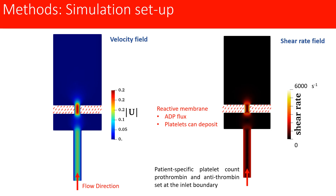In terms of biochemical boundary conditions, an ADP flux was applied at the membrane boundary. The membrane boundary is indicated with red dashed lines, and at this boundary platelets are able to deposit.